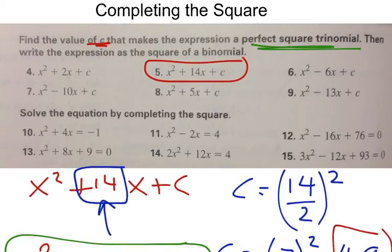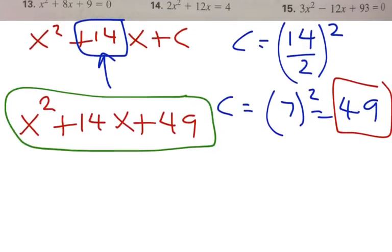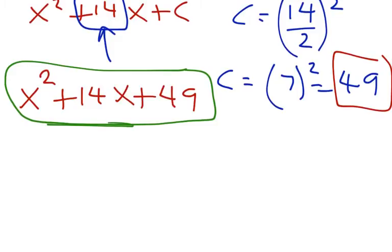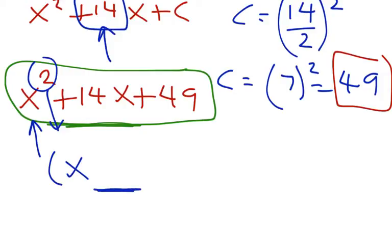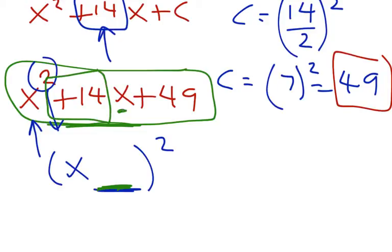The second part of the directions says: write the expression as a square of a binomial. To write this expression as a square of a binomial, whatever variable you have here, you bring x — if it's x squared, you bring 1x. The second part of the binomial is going to be half of whatever value is next to the x. Half of 14 is 7.